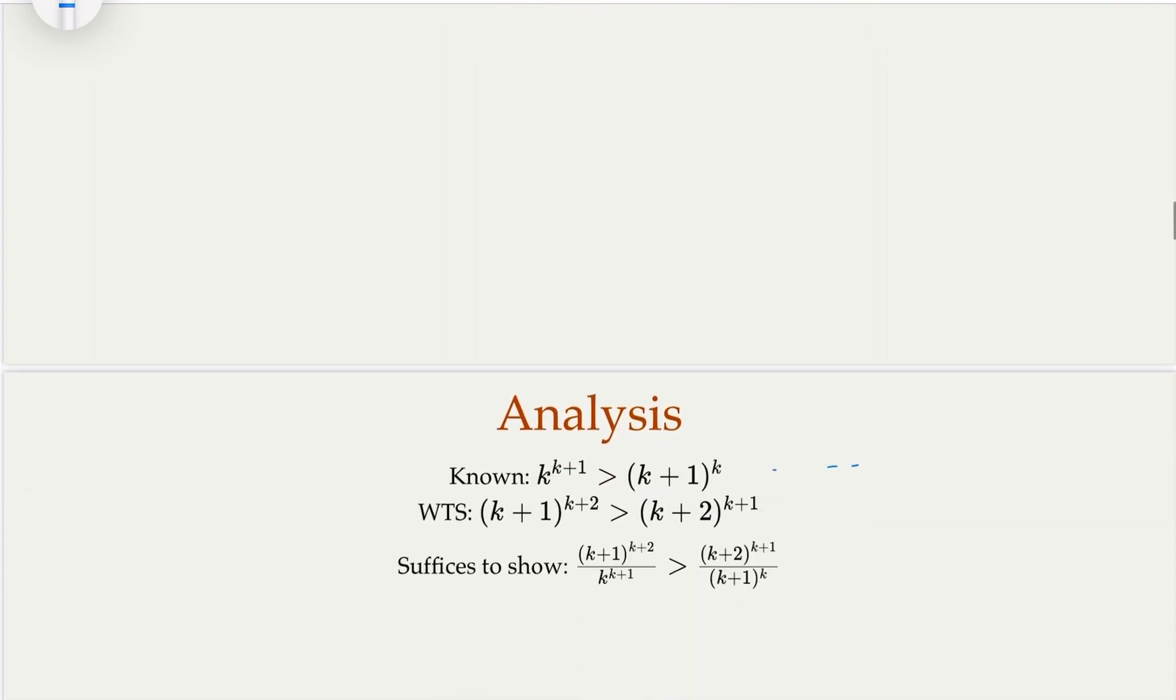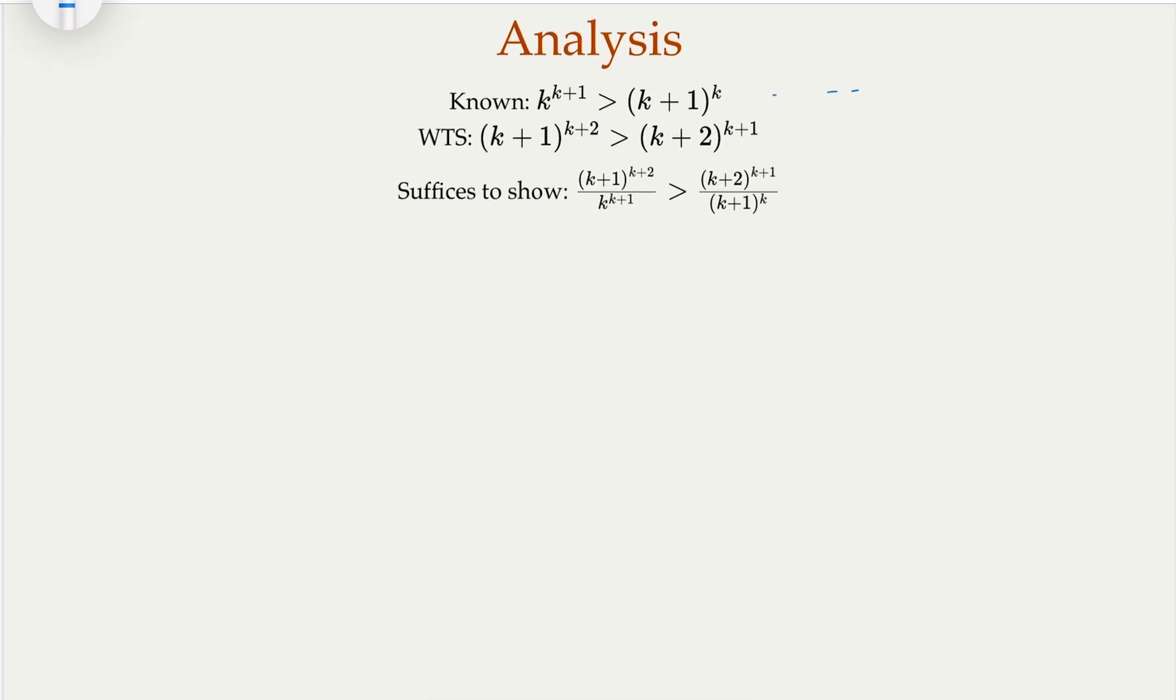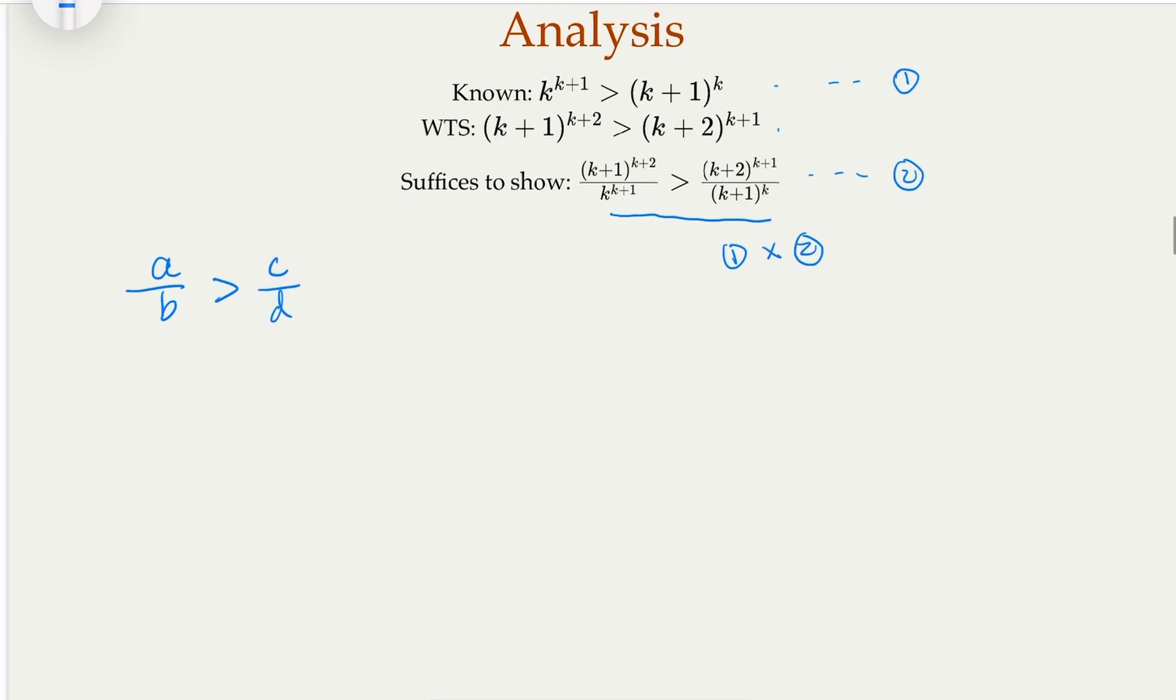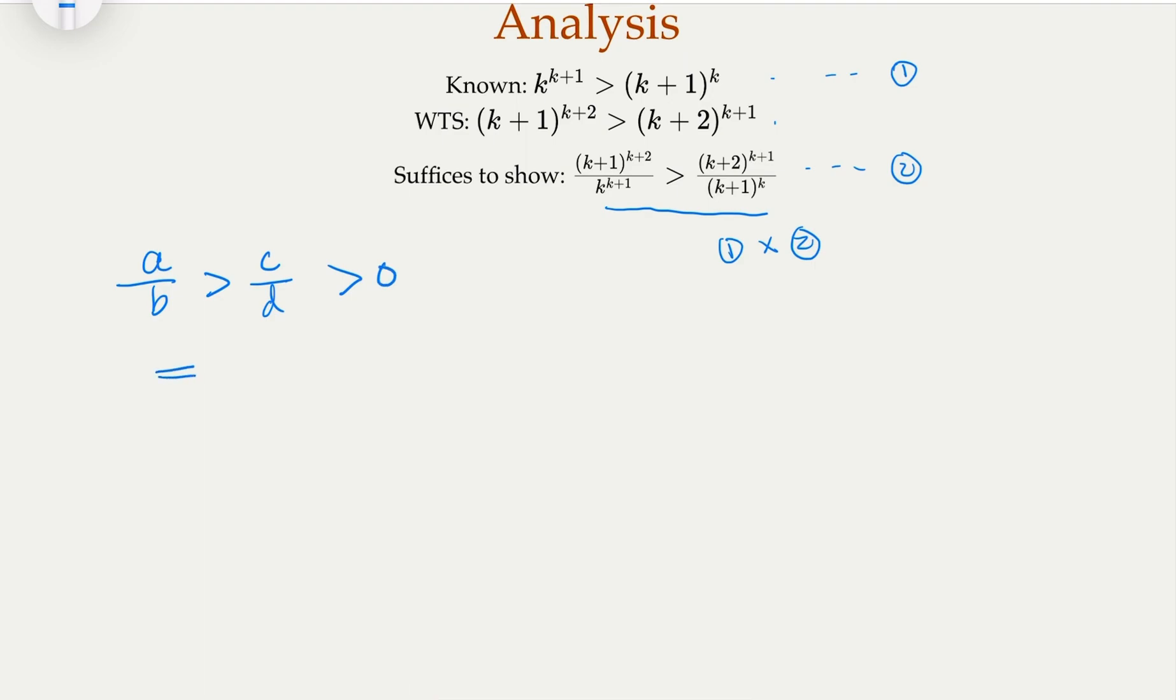So here, I claim that it suffices to show this inequality holds, because if this is equation 1, this is inequality 2, I can just do 1 multiply 2, that will give the thing that we would like to prove. Now, remember, when you have a over b greater than c over d for positive numbers, greater than 0, this is equivalent if and only if the cross product, in this case, ad greater than bc greater than 0. So this is exactly what we need to do. We need to do the cross product here.